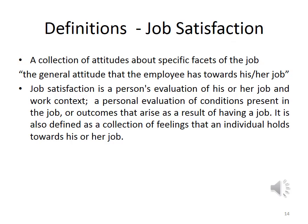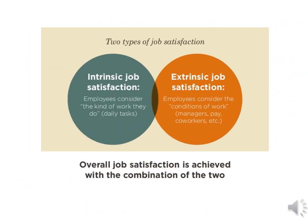Job satisfaction can be defined as the general attitude that employees have towards their jobs — a collection of attitudes about specific facets of the job, representing the personal evaluation of one's job and work context. Overall job satisfaction is achieved through the combination of two aspects: intrinsic job satisfaction, which comes from the kind of work employees do, and extrinsic job satisfaction, which comes from the evaluation of conditions of work.